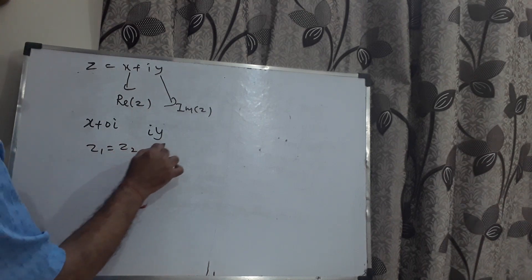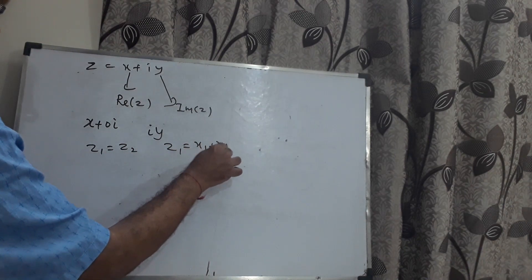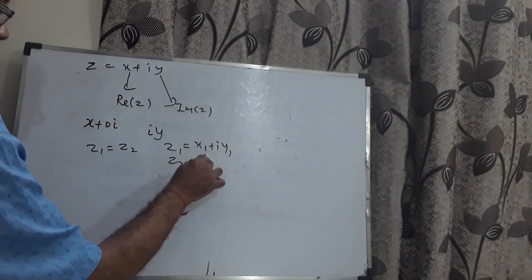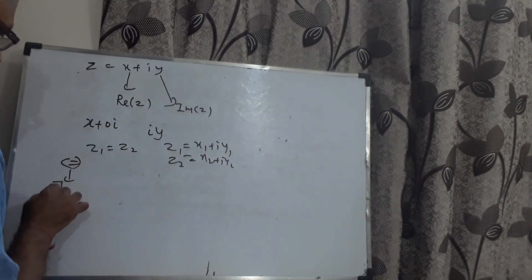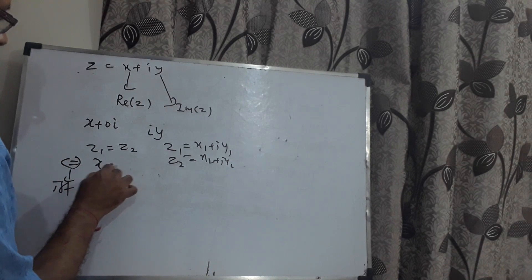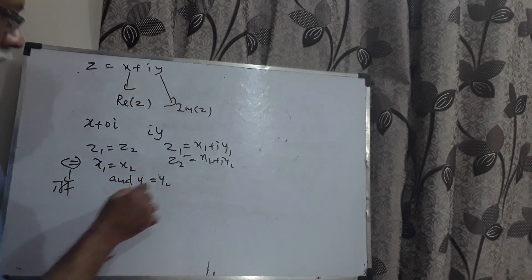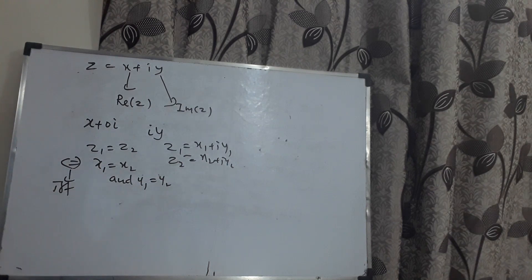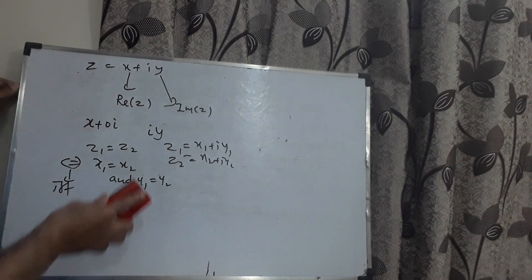If z1 equals z2, where z1 is x1 plus iy1 and z2 is x2 plus iy2, then z1 equals z2 if and only if x1 equals x2 and y1 equals y2. If the real parts are equal and the imaginary parts are equal, those two complex numbers are equal. That is the real meaning of the if-and-only-if property.